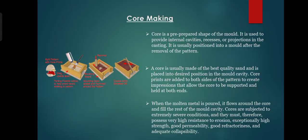After this all process, then core making. Here we can see the core making images. Cores are placed into the mold cavity to form the interior surface of the casting. Thus the void space is filled with molten metal and eventually becomes the casting. A core is a prepared shape placed into the mold to provide internal cavities, recesses or projections. It is usually positioned into the mold after the removal of the pattern. When the molten metal is poured, it flows around the core and fills the rest of the mold cavity.